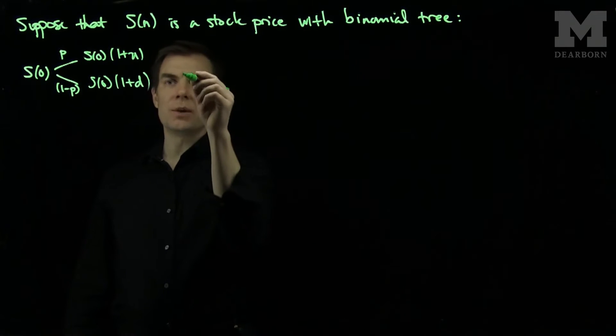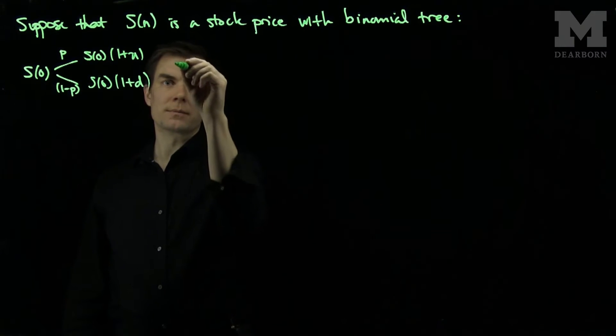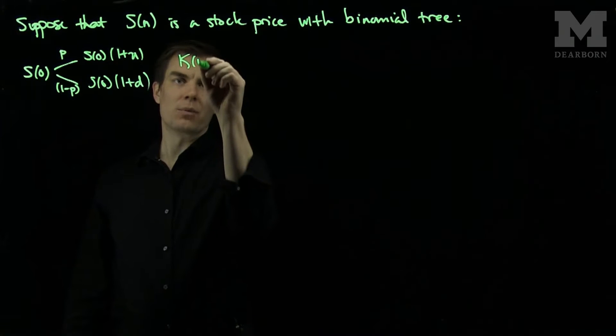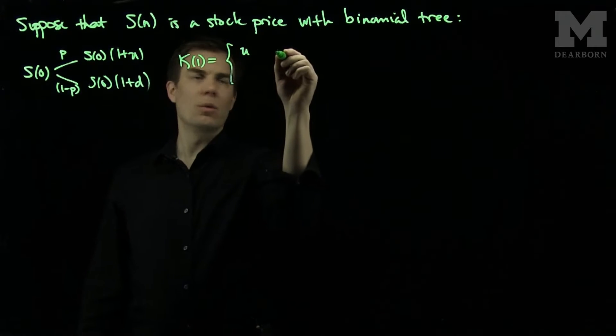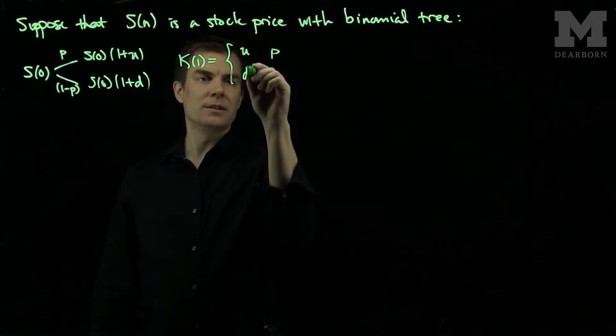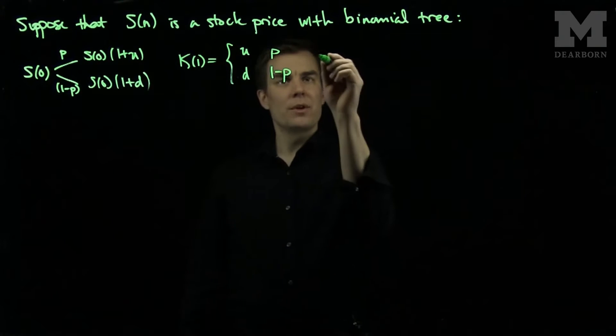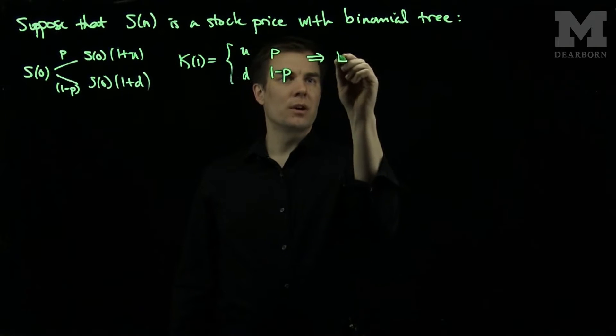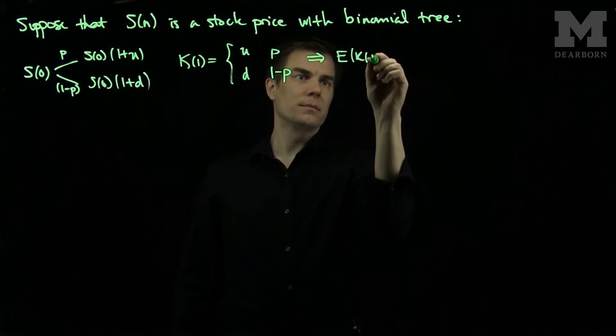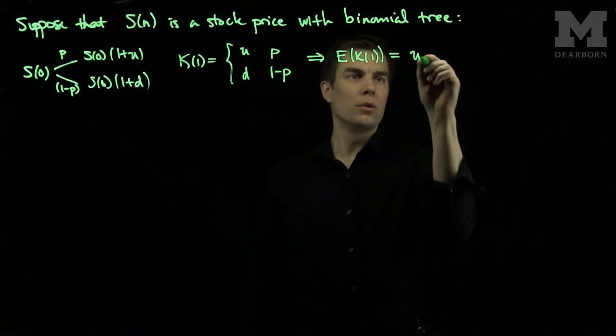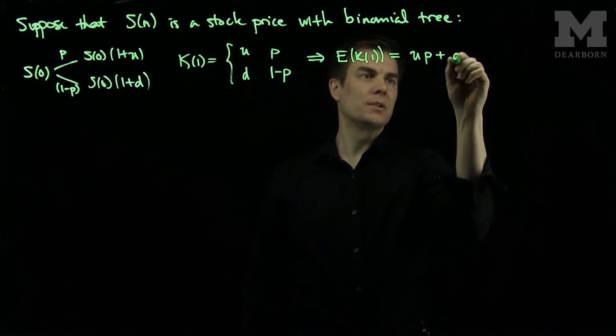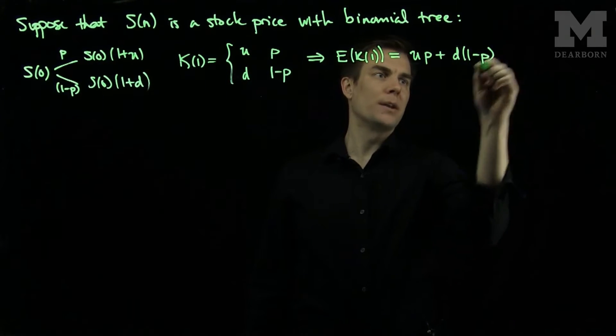So these U and D will define for us my one-step rate of return K_1, which will be U with probability P and D with probability 1-P. We can compute the expected value of this one-step return: E(K_1) will be equal to UP plus D times (1-P).